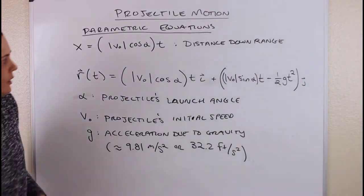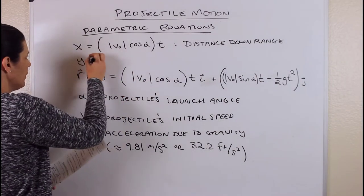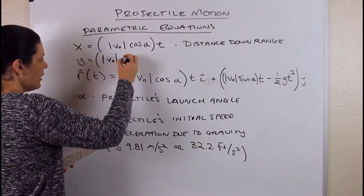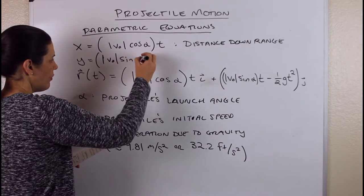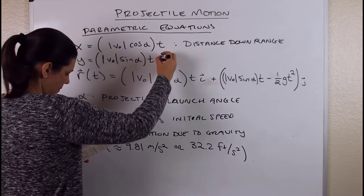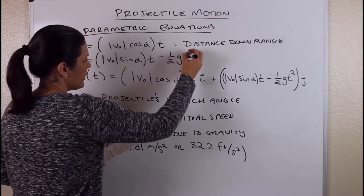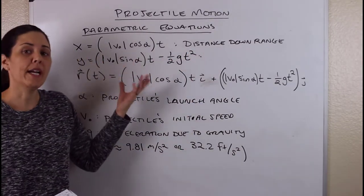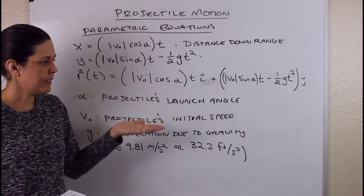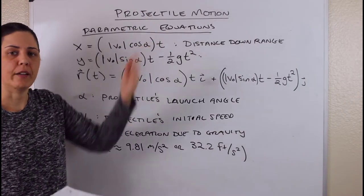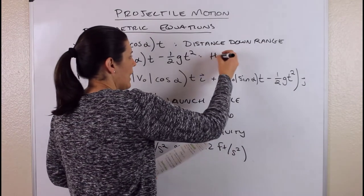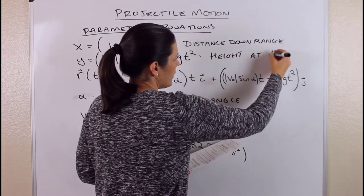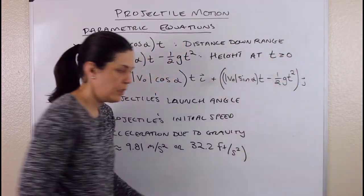Then the y component: y equals the magnitude of v naught times sine of alpha times t, minus one-half g times t squared. If it's the y component, think about what that represents — it's actually going to be how high the projectile goes, so we'll say height, at time t, as long as t is positive.